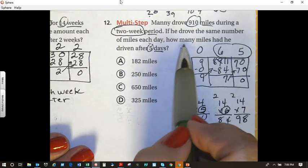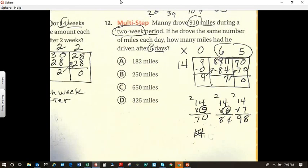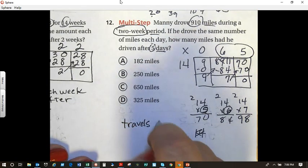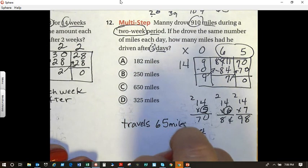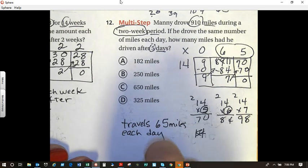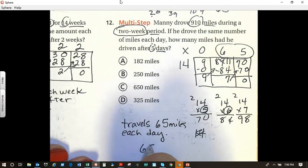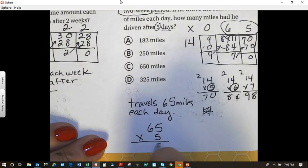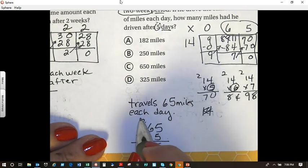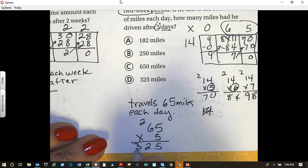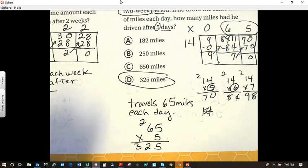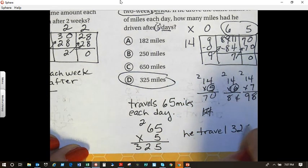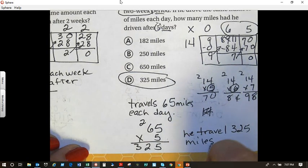So the question is, how many miles had he traveled after 5 days? Now remember, this was the hidden question. He travels 65 miles each day. How many does he travel after 5? Let's figure that out. 65 times 5. 5 times 5 equals 25. Regroup my 2. 5 times 6 is 30. 31, 32. So the answer is D. He travels 325 miles after 5 days.